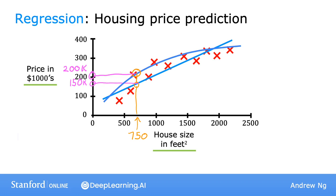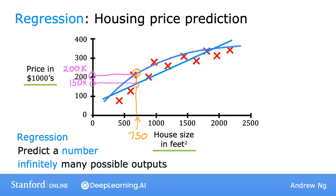To define a bit more terminology: this housing price prediction is a particular type of supervised learning called regression. By regression, I mean we're trying to predict a number from infinitely many possible numbers — such as house prices in our example, which could be $150,000, $70,000, $183,000, or any other number in between. So that's supervised learning: learning input-output or x to y mappings, with regression being the case where the task is to predict a number.